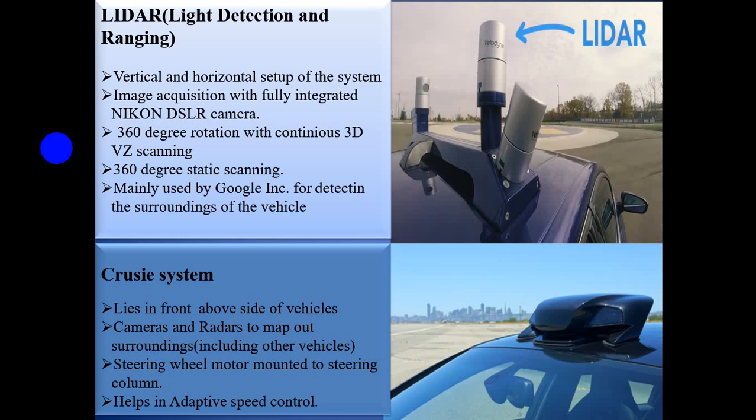Cruise system. It is similar to the LIDAR system. It lies on the front and every side of the vehicle. Cameras and radars are used to map the outer surroundings. The steering wheel-mounted control helps in adaptive speed control.